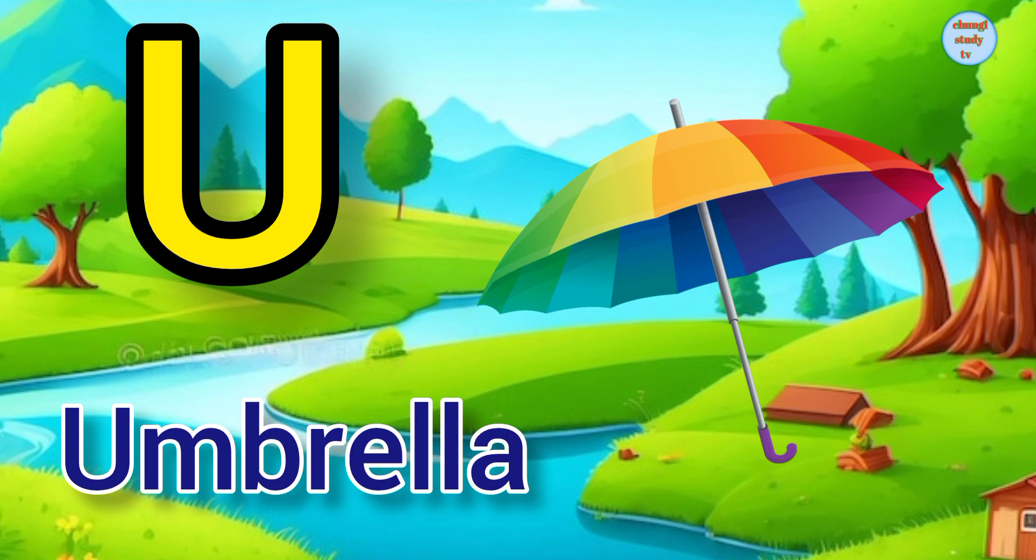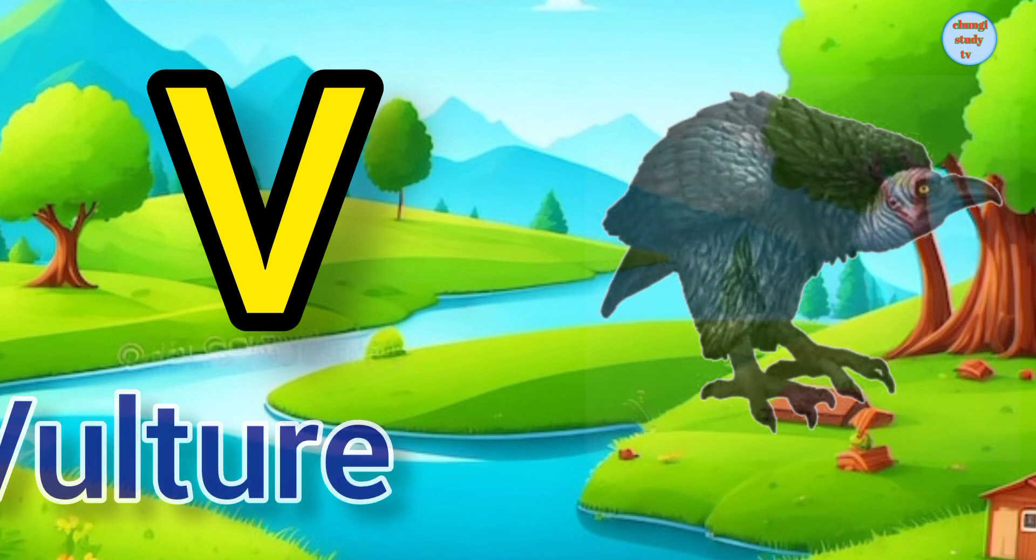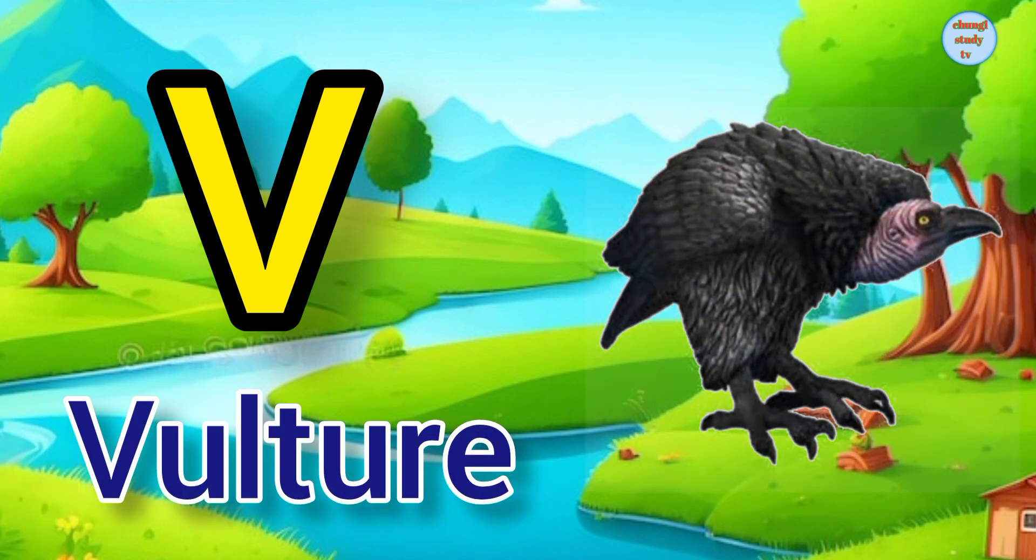U for umbrella, Umbrella means chatta. V. V for vulture, Vulture means gullab.